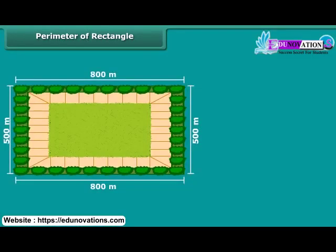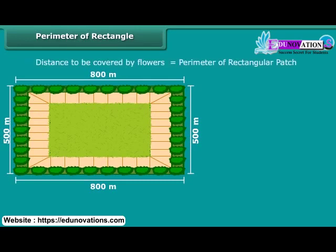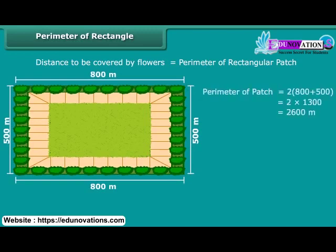We wish to plant flowers on all sides of a rectangular patch of land whose length is 800 meters and breadth is 500 meters. Calculate the total distance to be covered by flowers. The distance to be covered by flowers will be equal to the perimeter of the rectangular patch. The perimeter of the rectangular patch is 2,600 meters. Therefore, the total distance to be covered by flowers is 2,600 meters.